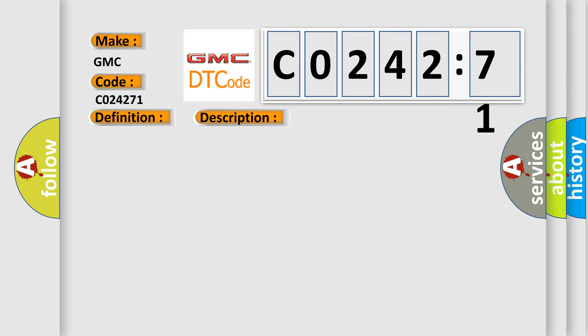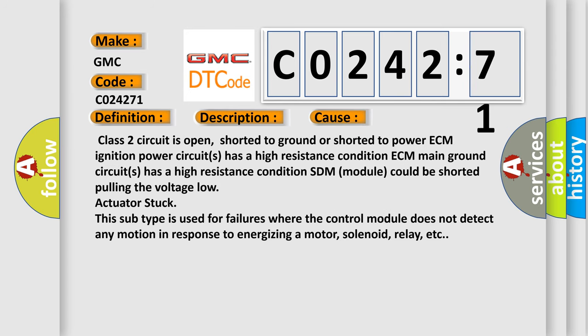This diagnostic error occurs most often in these cases: class 2 circuit is open, shorted to ground, or shorted to power. ECM ignition power circuits has a high resistance condition. ECM module could be shorted, pulling the voltage low. Actuator stuck.